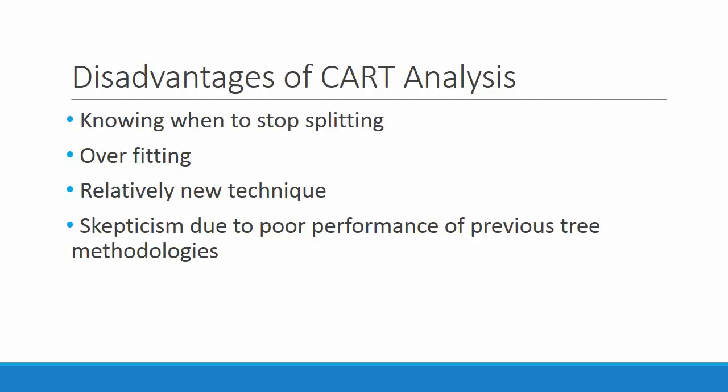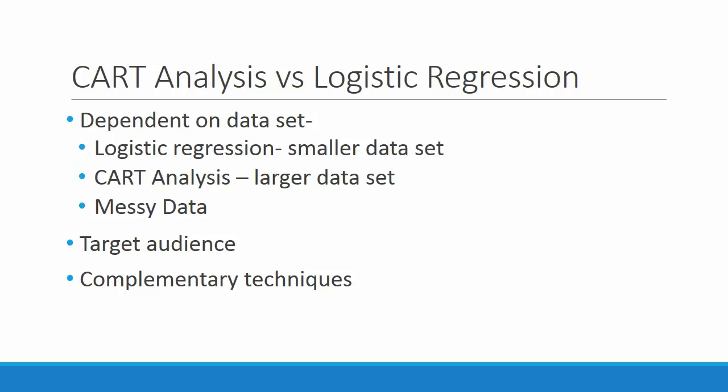One problem to watch out for when using CART analysis is overfitting the data. Since it is hard to know when it is appropriate to stop splitting a tree, it might be tempting to add additional nodes to make the model more precise. This however makes the analysis less robust as it will then be tailored to the specific dataset being used. Statisticians are also hesitant to use CART analysis due to how new the technique is and due to the poor performance of previous tree-based methodologies. Therefore, when trying to decide between logistic regression and CART analysis, logistic regression is better when the size of the dataset is small, while CART analysis is more efficient when dealing with large, messy datasets. It may also be useful to keep in mind the audience: CART analysis may be more useful when presenting to non-statisticians, while logistic regression may be preferred when presenting to statisticians.